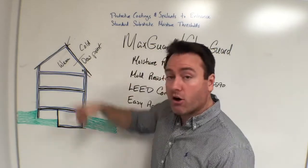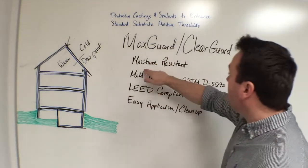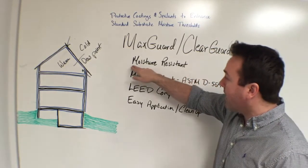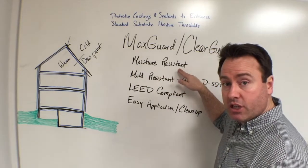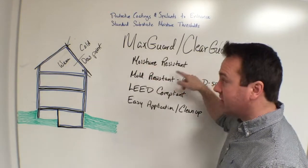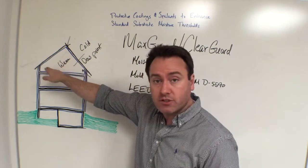So that's our largest problem that we have to deal with year-round. When it comes to MaxGuard and ClearGuard, the best way we can begin to cure this problem of mold growth in an attic space is by having moisture resistance to all of these surfaces.